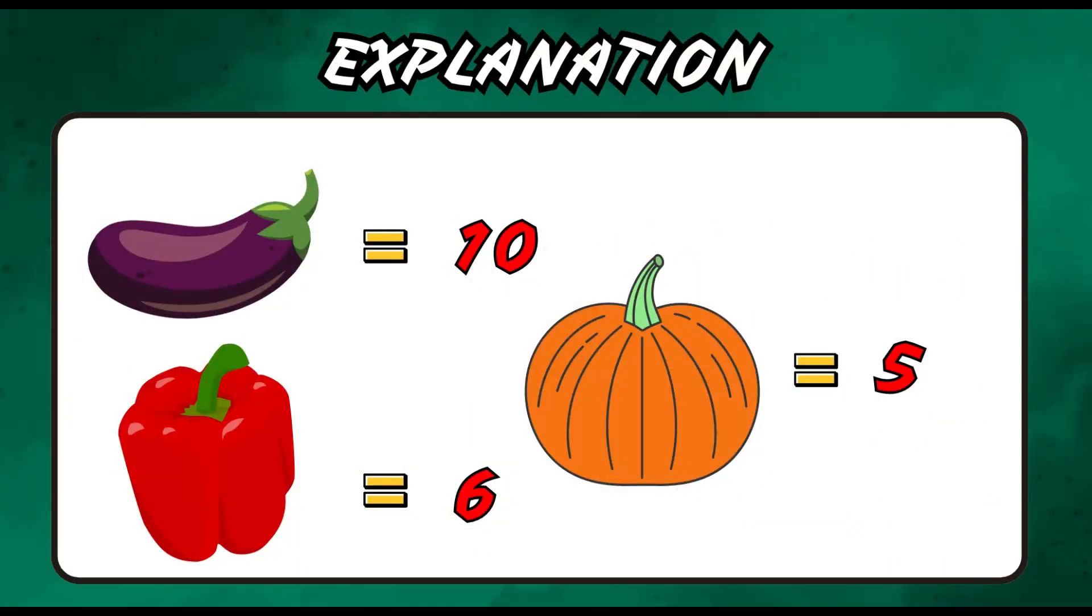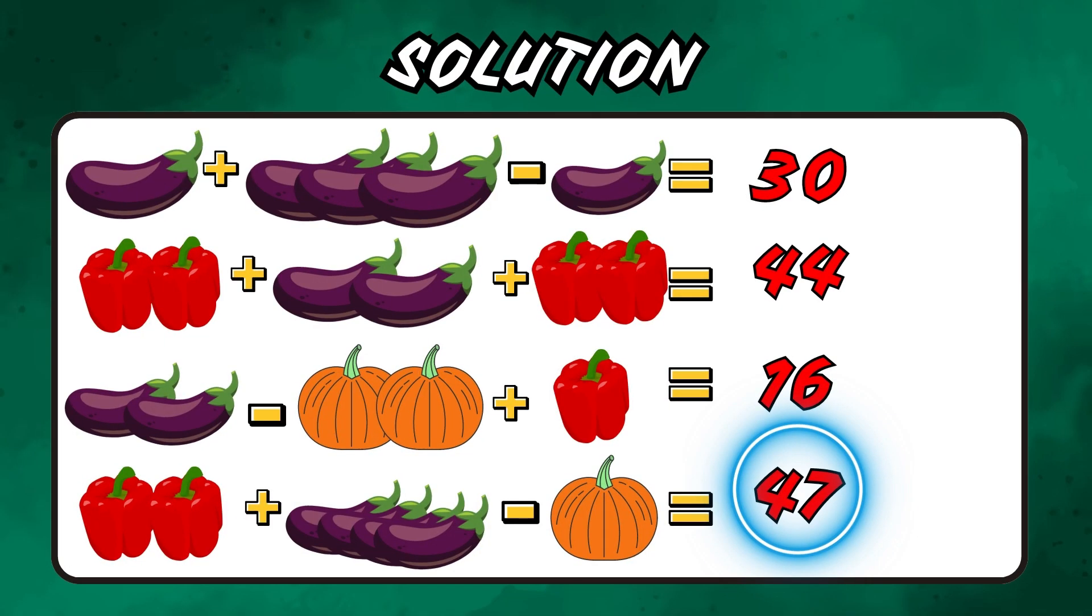No worries. Let's solve it together. The brinjal holds a value of 10, the bell pepper is 6, and the pumpkin is 5. Apply it to the equation and get the answer. By doing so, we get the equation 12 plus 40 minus 5, which is equal to 47.